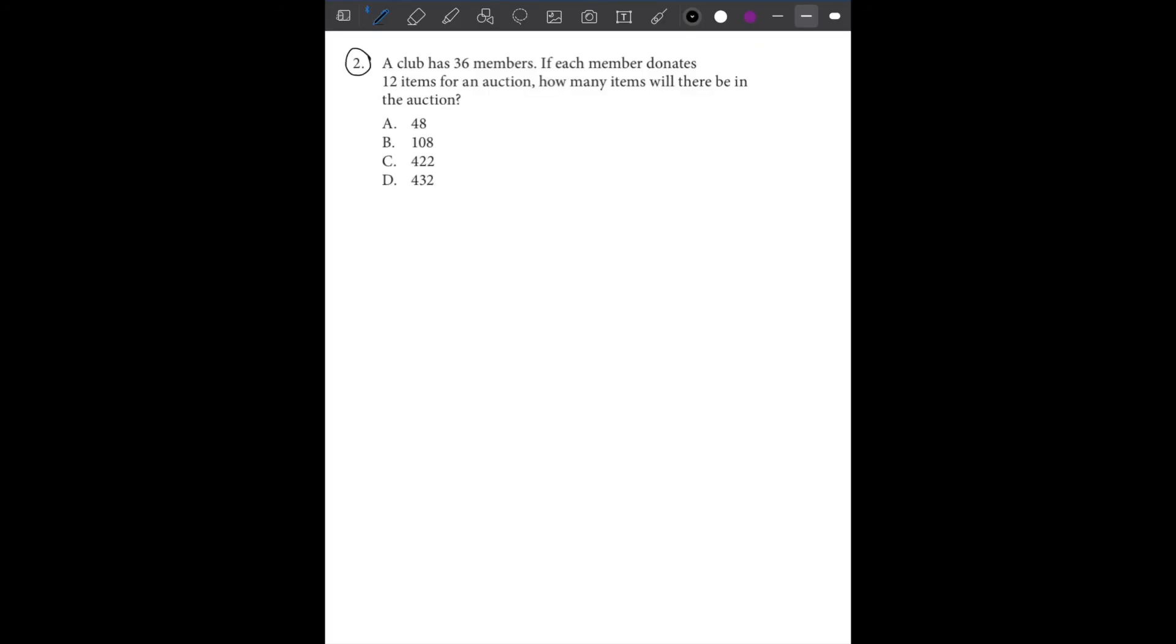So we're working with number two. It says a club has 36 members. If each member donates 12 items for an auction, how many items will there be in the auction? So writing everything down, the club has 36 members. That's our first piece of information. The second piece of information says if each member donates 12 items, so 12 items per member is donated.